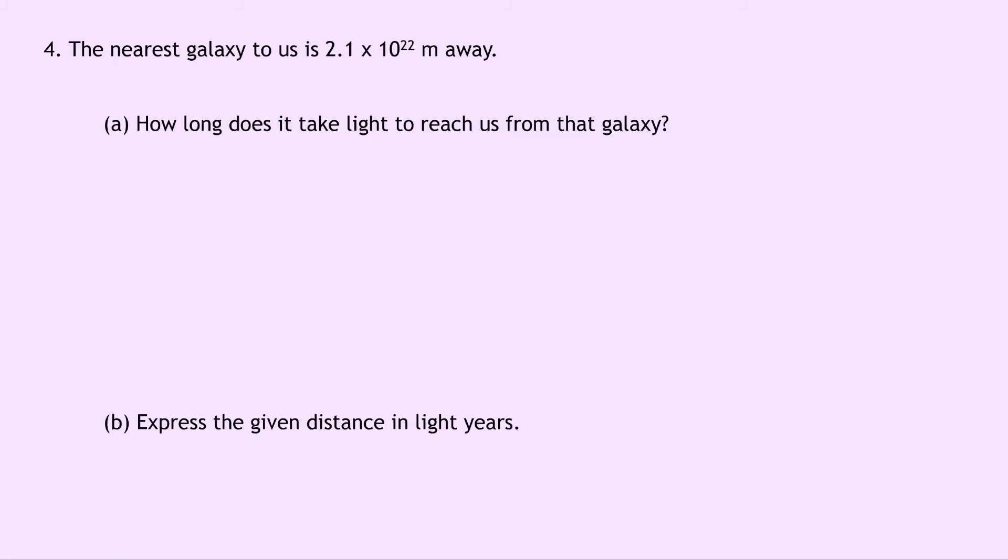Lastly question 4 says that the nearest galaxy to us is 2.1 times 10 to the 22 metres away. Part A says how long does it take light to reach us from that galaxy? Well we're just going to do a classic speed distance time here. So we're trying to find t, we know the speed of light v is 3 times 10 to the 8 metres per second and the distance in the equation is 2.1 times 10 to the 22 metres. The reason we can use it in this equation is because it's given in metres and not in light years or AU.